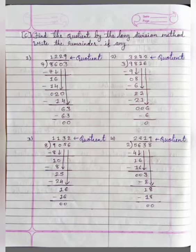Question C: Find the quotient by the long division method and write the remainder if any. Students, this is a 4-digit sum. You can see here 8603. But it is the same as question B.